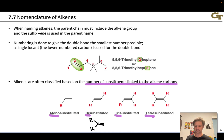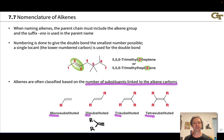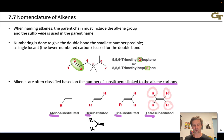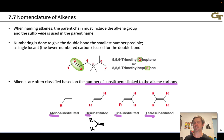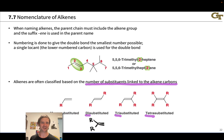We can also describe trisubstituted alkenes with three R groups linked to the doubly bonded carbons, and tetrasubstituted alkenes with four R groups. This classification scheme is quite important because it relates to alkene stability, as we'll see in the ensuing slides.